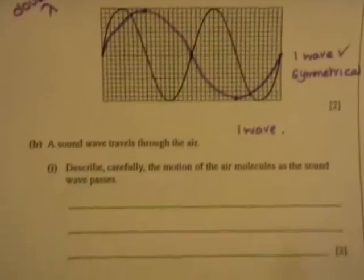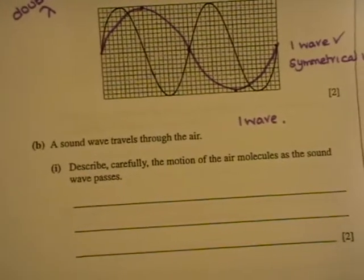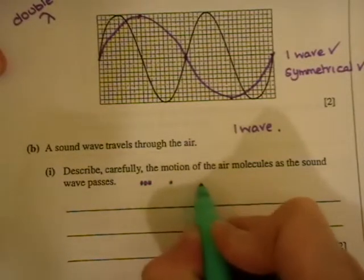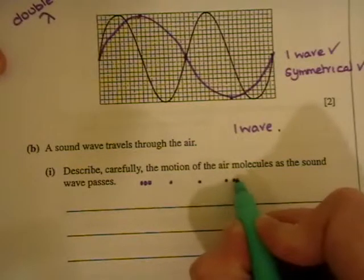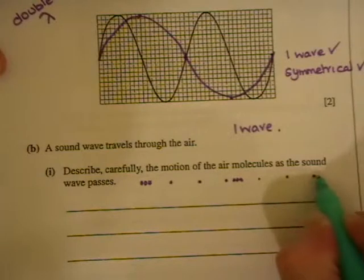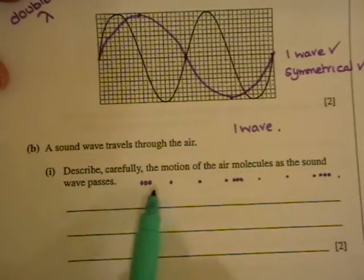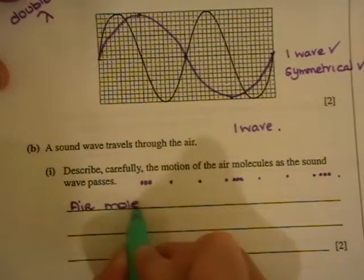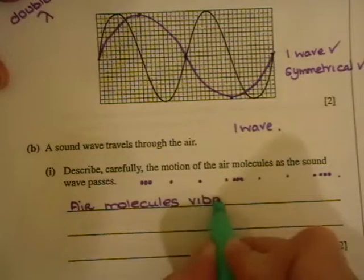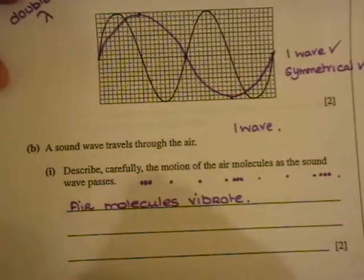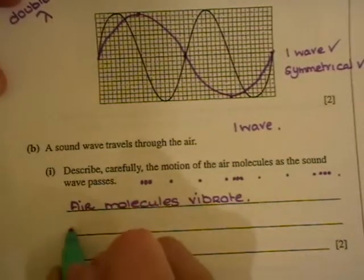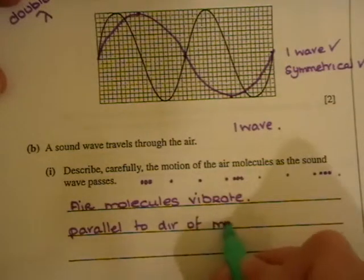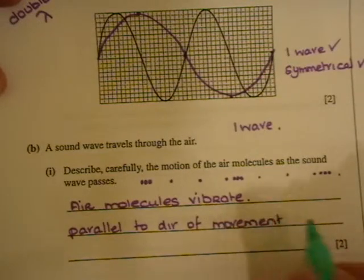A sound wave passes through the air. Describe carefully the motion of the air molecules as a sound wave passes. Now you know that sound waves are longitudinal waves. And if we just draw what a longitudinal wave looks like, if these molecules close together and then spread out and then close together. Now what happens as the sound passes by, the molecules vibrate. So that's the first thing we're going to say: that air molecules vibrate. And what direction do they vibrate? They vibrate parallel to the direction of movement of the wave, or direction of travel of the wave.